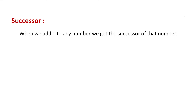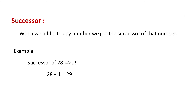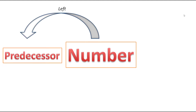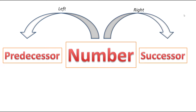Next comes successor. The definition of successor is: when we add 1 to any number, we get the successor of that number. For example, if we have to find out the successor of 28, we add 1 to 28. Therefore, 28 plus 1 gives us 29. So, 29 is the successor of 28. To remember easily, the left side of a number is its before number or predecessor, and the right side of a number is its after number or successor.